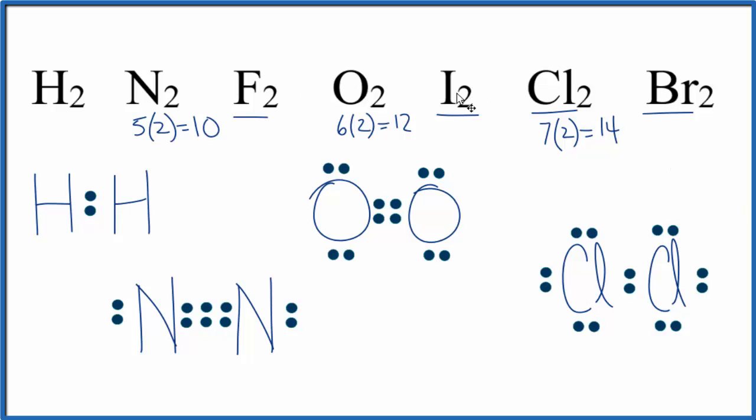And like we said, fluorine, iodine, and bromine, they'll have the same Lewis structure. We'll just replace this symbol. They're all single bonds.